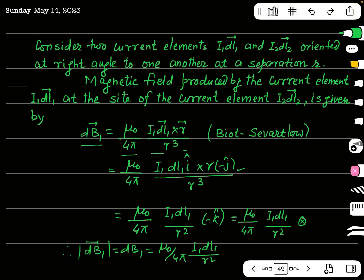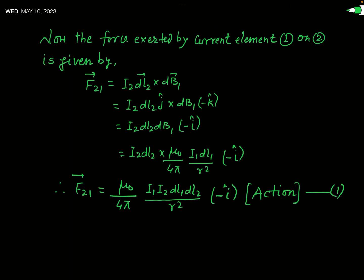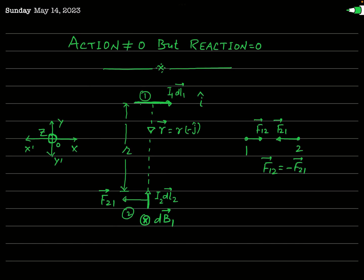The magnitude of this magnetic field is dB₁ = (μ₀/4π) · (I₁dL₁) / r², since the magnitude of −k̂ is 1. This magnetic field produced by the first current element now exerts a magnetic force on the second current element. The magnetic force on a current element in a magnetic field is i·dL × B, so F₂₁ = I₂dL₂ × dB₁.